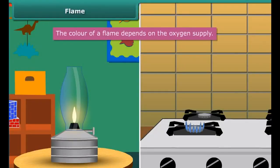When we look at a flame of a kerosene lamp, it is yellow in color, but the flame of a kitchen stove is blue. The color of a flame depends on the oxygen supply. If the oxygen supply is less, the flame will appear yellow due to incomplete combustion of fuel. If it is more, the flame will appear blue due to complete combustion of fuel.